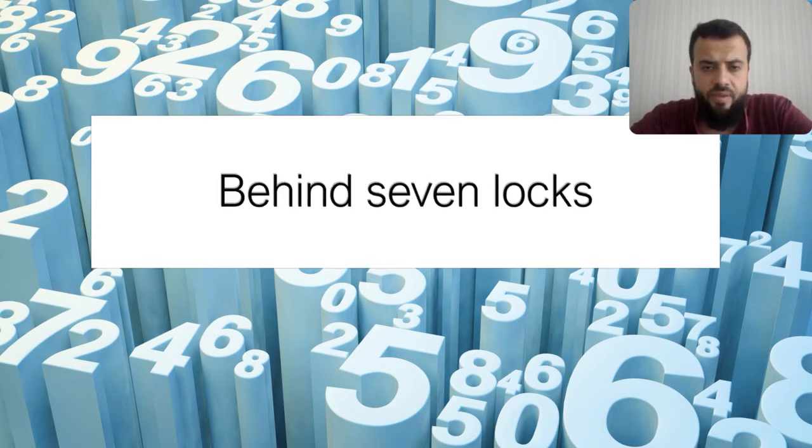After that, number seven. Behind seven locks. Of course, locks here, we're talking about the lock and the key, like a safe. Let's say that there is something that you must keep safe. You don't want to lose it, or you don't want anybody to steal it. Be very careful about it. Put it behind seven locks. Put it in a safe place, and make sure nobody can get it or steal it. For example, you borrow a book from somebody, or you borrow something expensive, and he tells you, please be very careful about it. Put it behind seven locks.